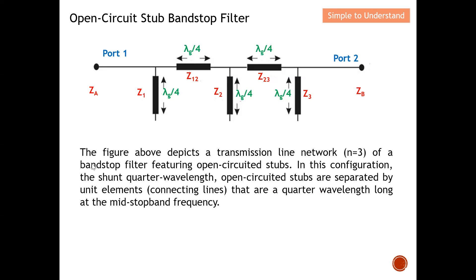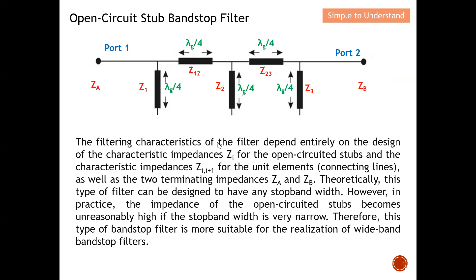The figure shows a transmission line network with n equals 3 — I count three open circuit stubs. In this configuration, the shunt quarter-wavelength open circuit stubs are separated by connecting lines, which are also quarter wavelength at the mid stop-band frequency. So all these transmission lines are quarter wavelength at the mid stop-band frequency of the band stop filter.